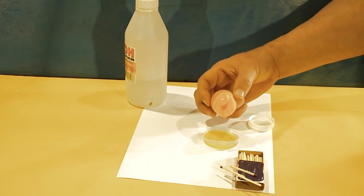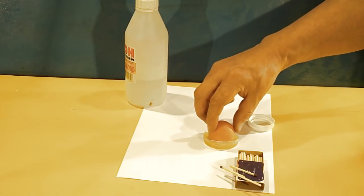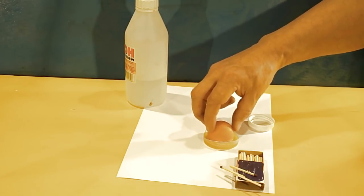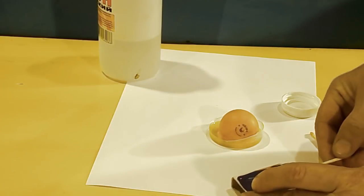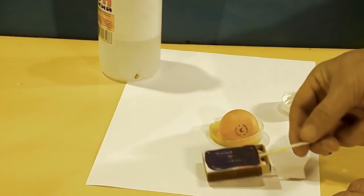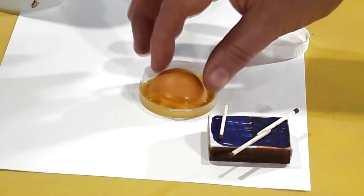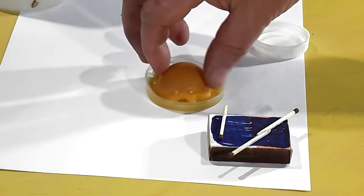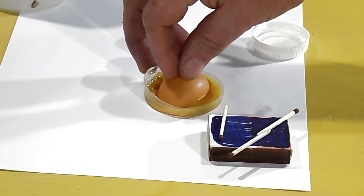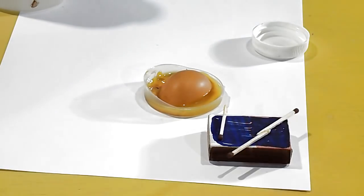As acetone evaporates, it becomes more and more liquefied. I tried to glue two matches. The result was not bad. I was able to pick up a whole box of matches.